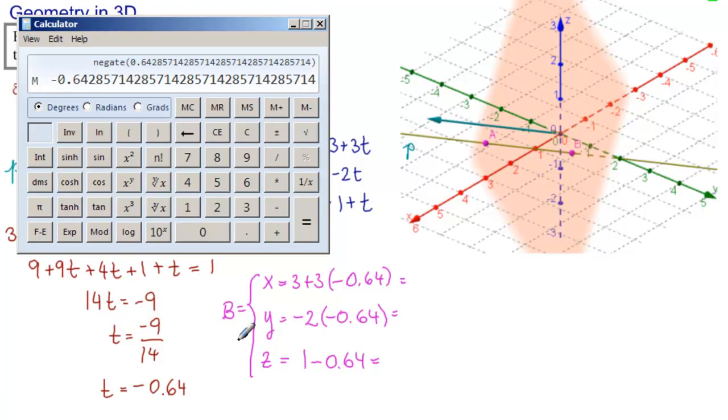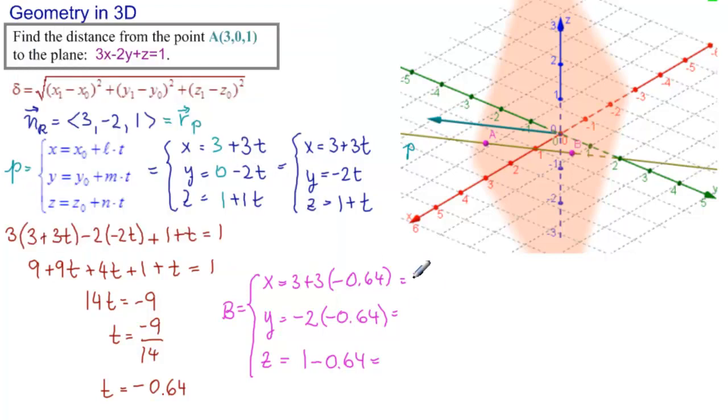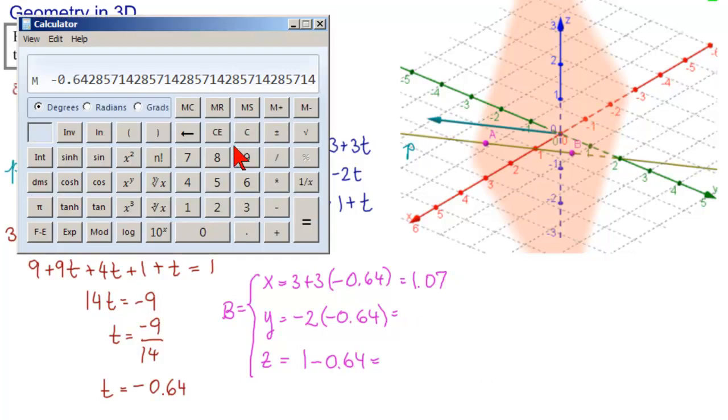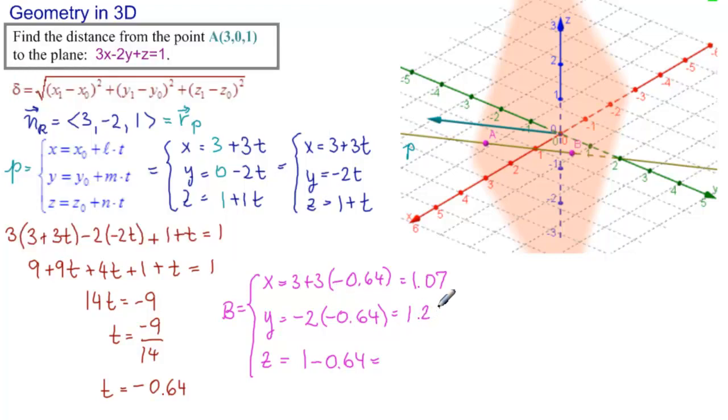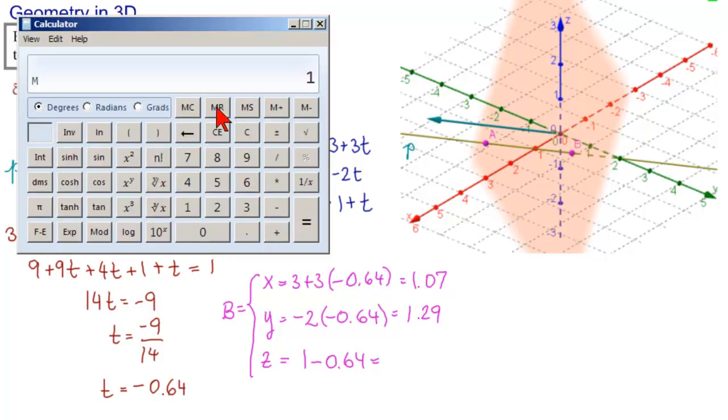And we have that number. We'll just put it in our memory, memory store. Multiply it by 3 equals, plus 3 equals, 1.07. Next one, we have memory recall times 2 equals 1.29, if we round that properly. Our last one is memory recall, and then plus 1 equals 0.36.